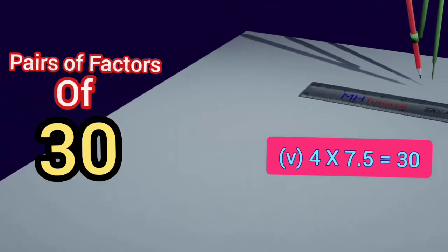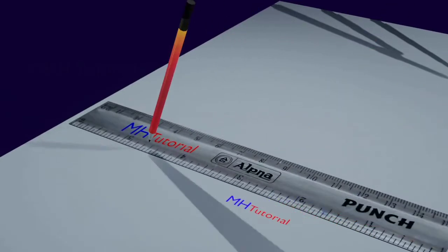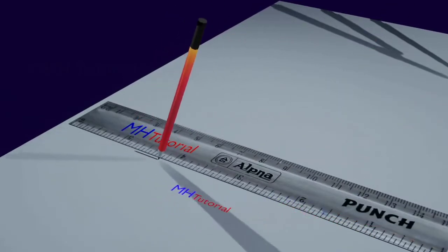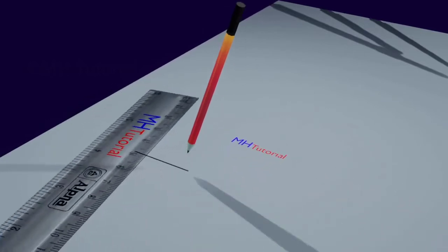Okay, then I'm starting the process. At first, two line sections measuring 4 centimeters and 7.5 centimeters are drawn on the left side of the page.